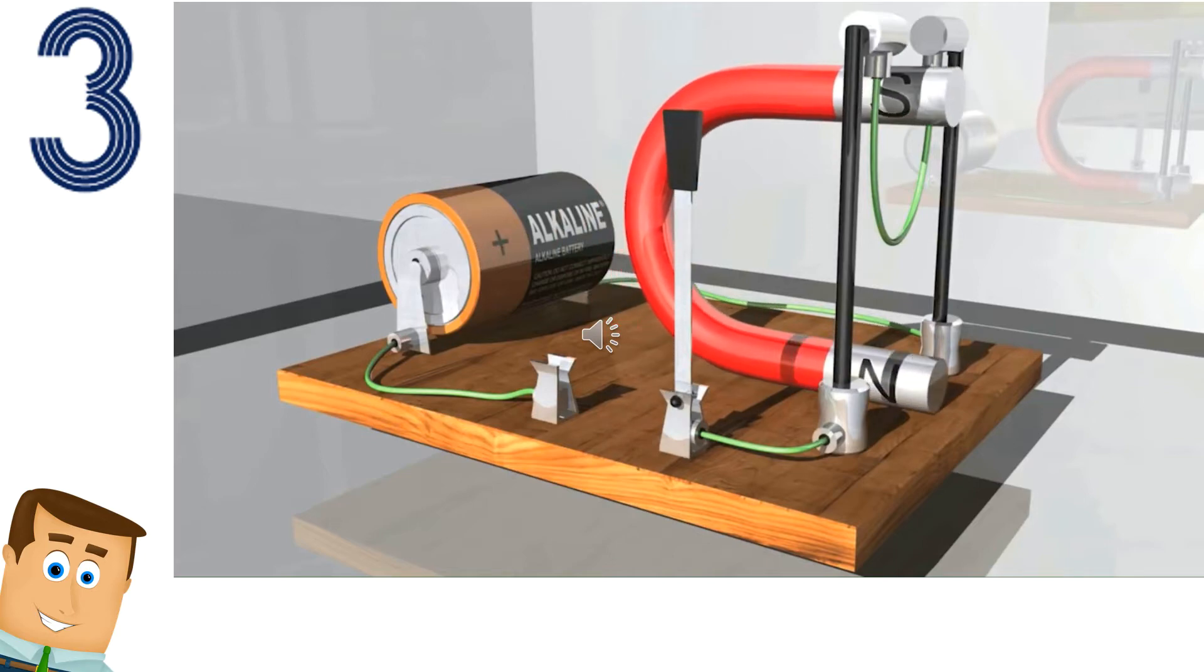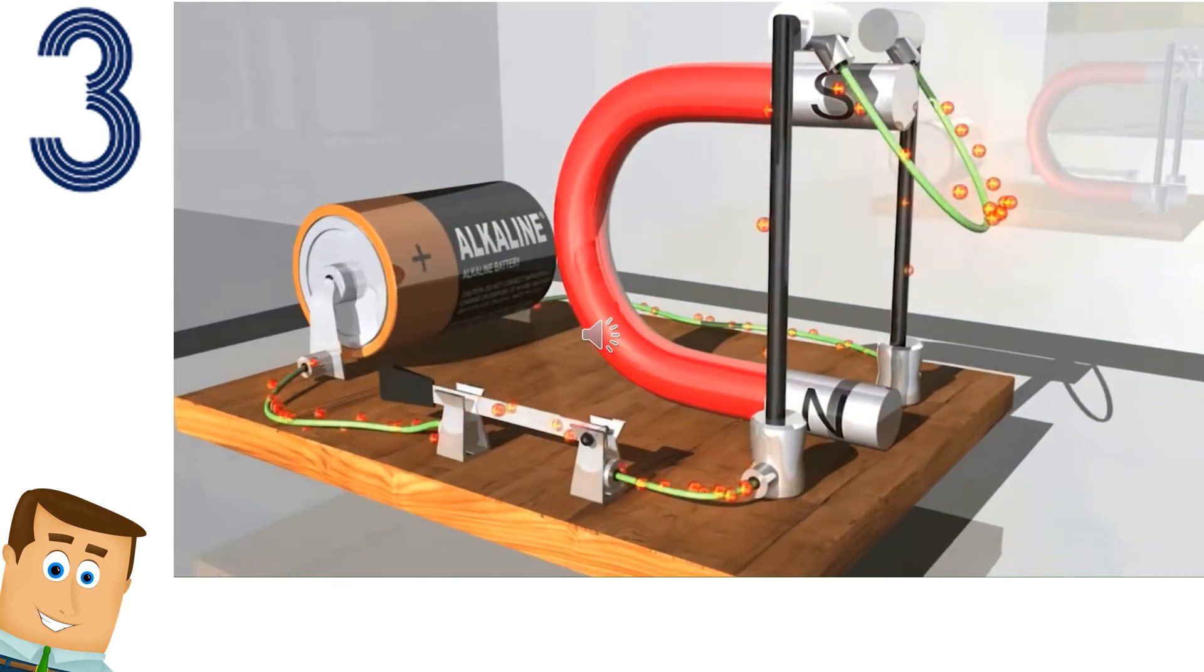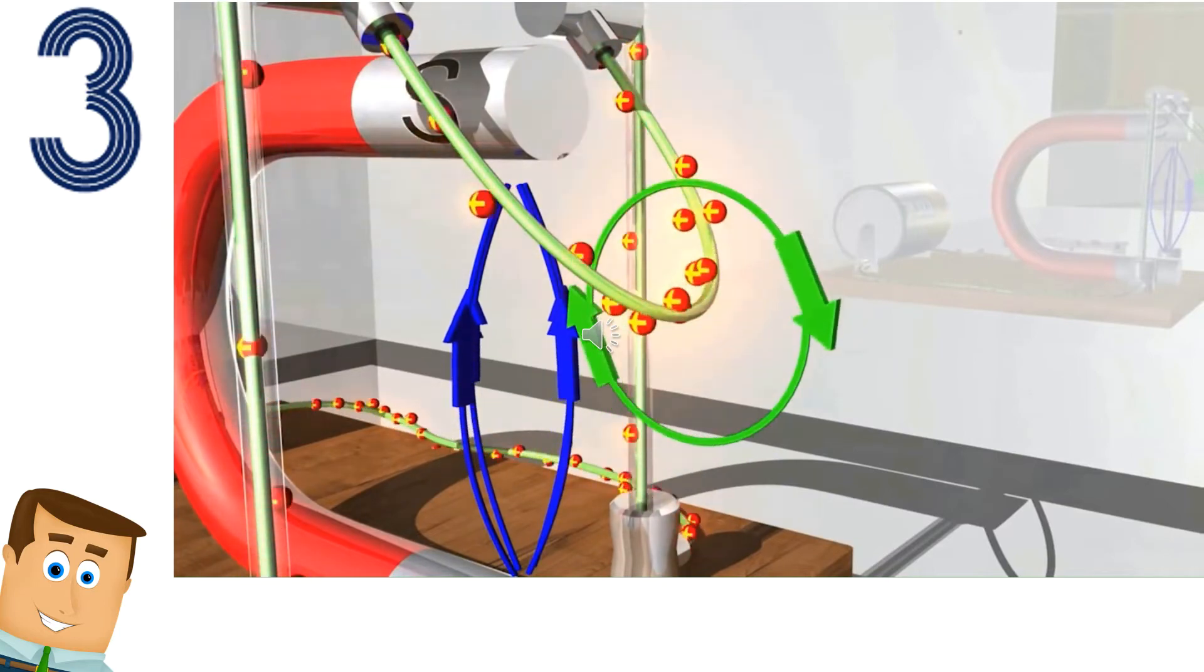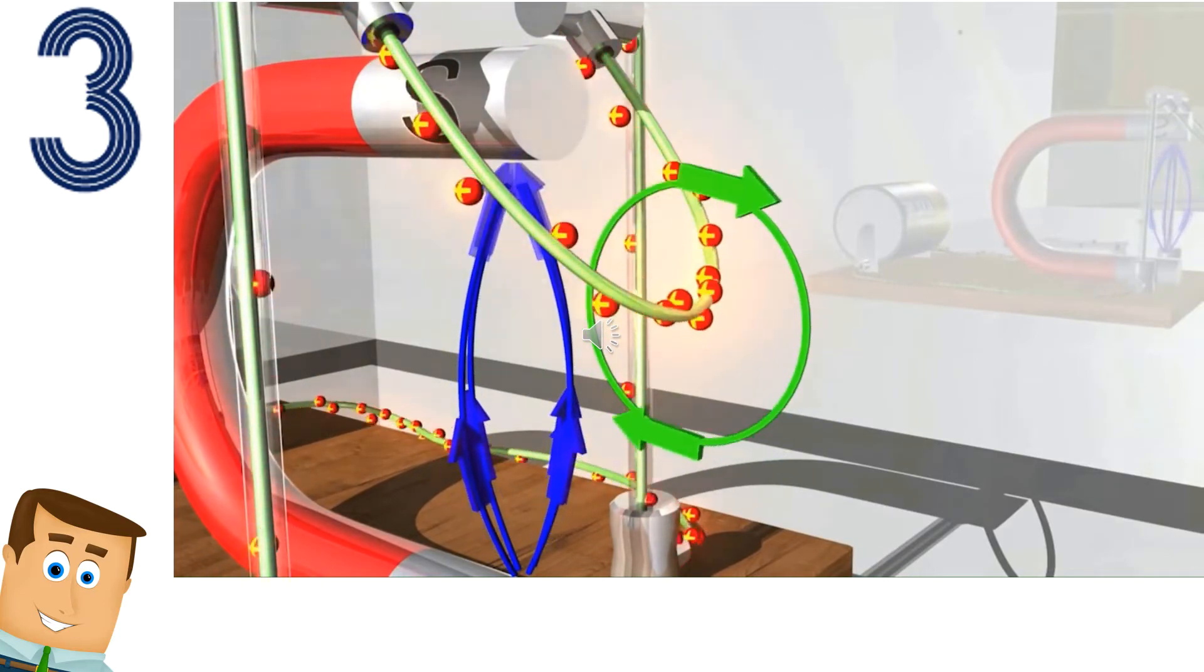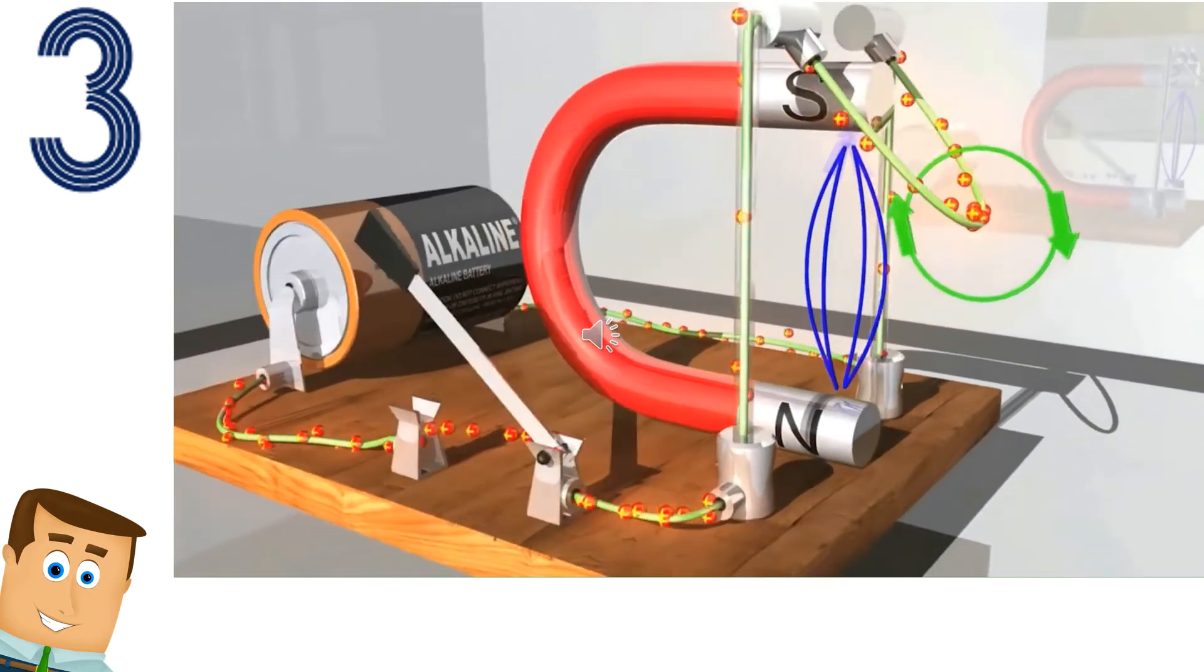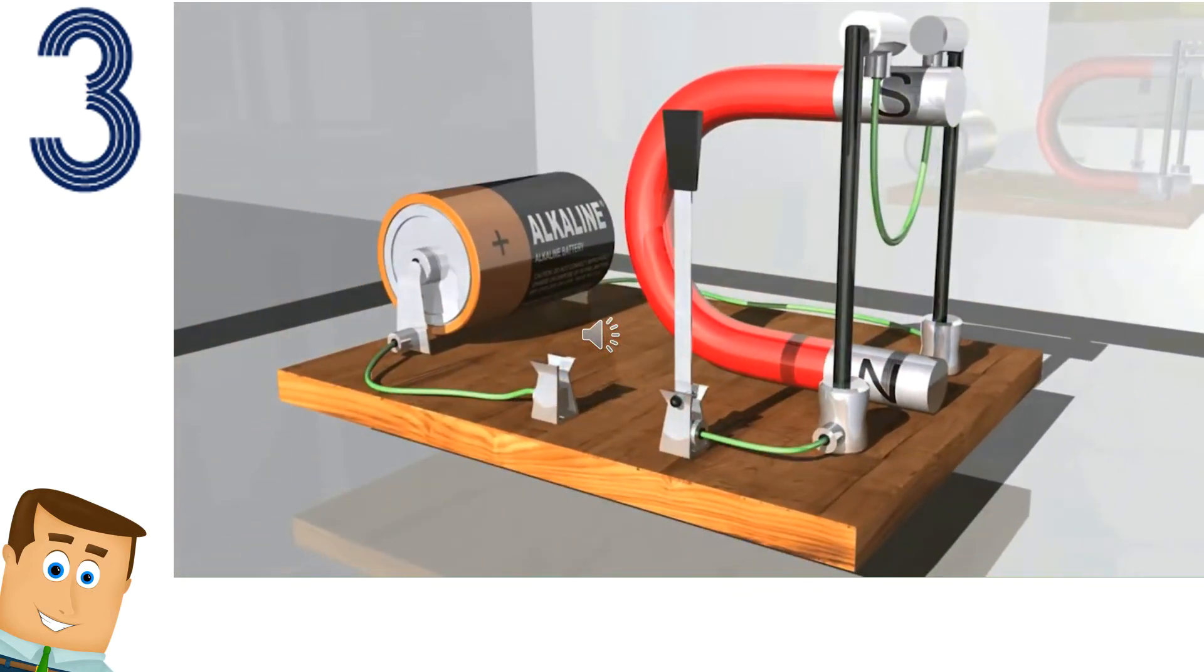Vamos a poner el imán alrededor del conductor y vamos a darle corriente al campo magnético. El campo magnético del imán interactúa con el campo magnético del conductor, haciendo que se mueva.